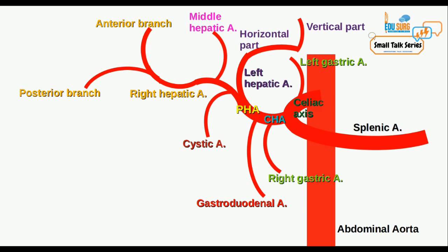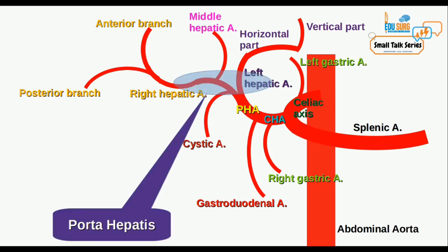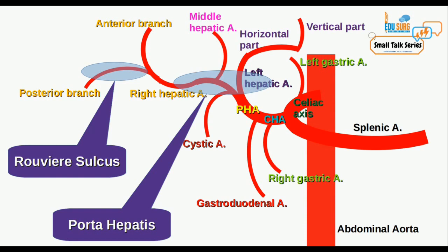Correlating with the liver surface: the bifurcation of the proper hepatic artery is at the level of the porta hepatis — this can be variable, but usually the porta hepatis will have the right and left hepatic artery branches. The right posterior branch is located in the Rouviere's sulcus, so the right posterior pedicle can be identified there, and the horizontal part of the left hepatic artery is at the inferior level of the base of segment 4a.